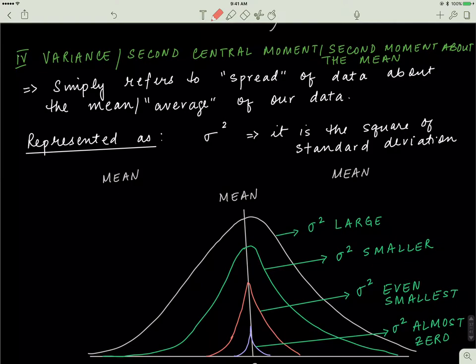Now we're going to start talking about variance. Variance is also called the second central moment. It's an average — that's what the word moment means. It's the second average, meaning we're going to have some square term. It's an average involving squares, and the word 'central' just means you're taking the average around the mean. Variance tells you how spread out your data is — how the individual values of x vary across the mean.